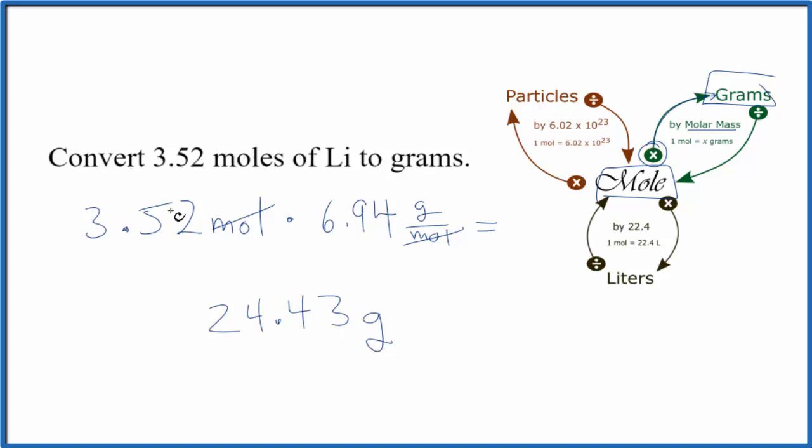So to recap, we took the amount of moles we had and multiplied that by the molar mass of lithium, which we found on the periodic table. Moles canceled out, we're left with grams.